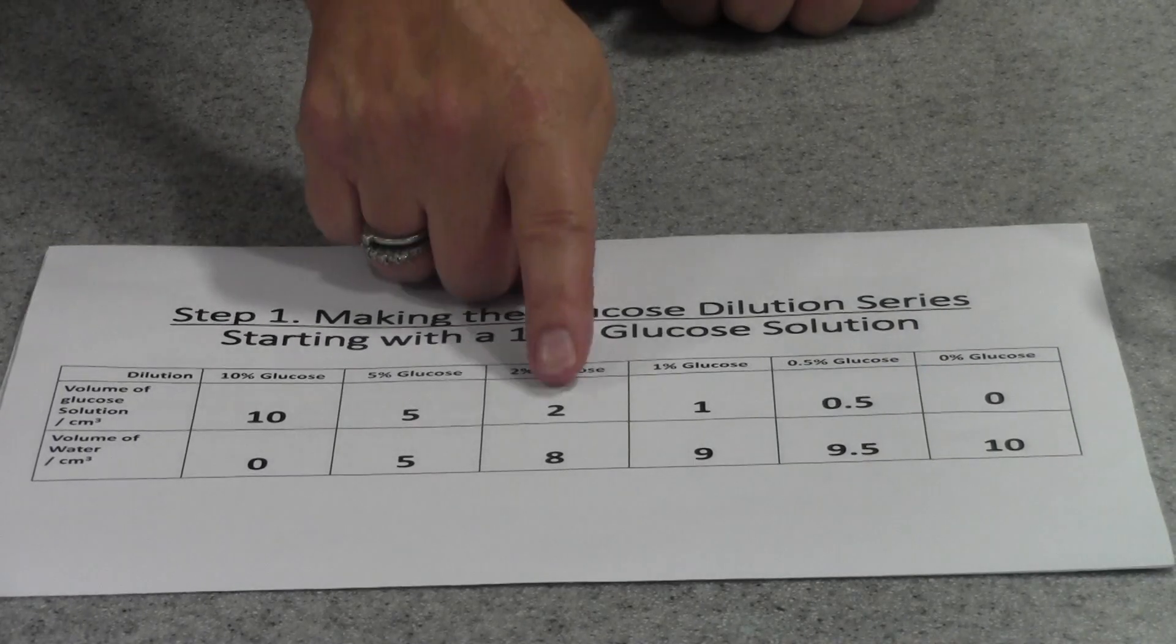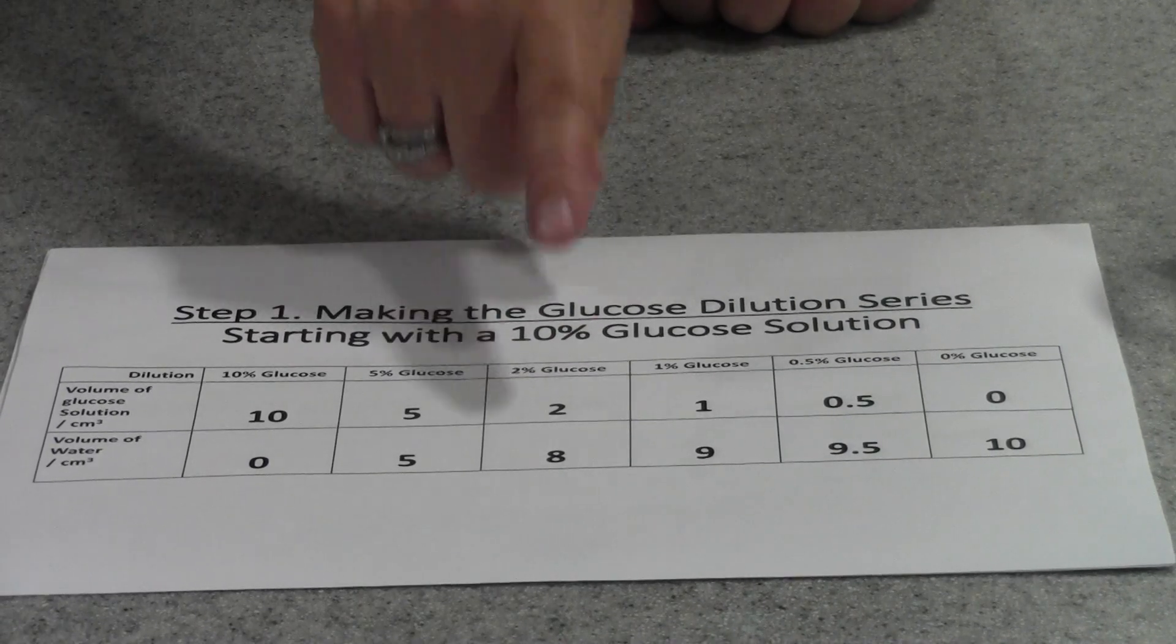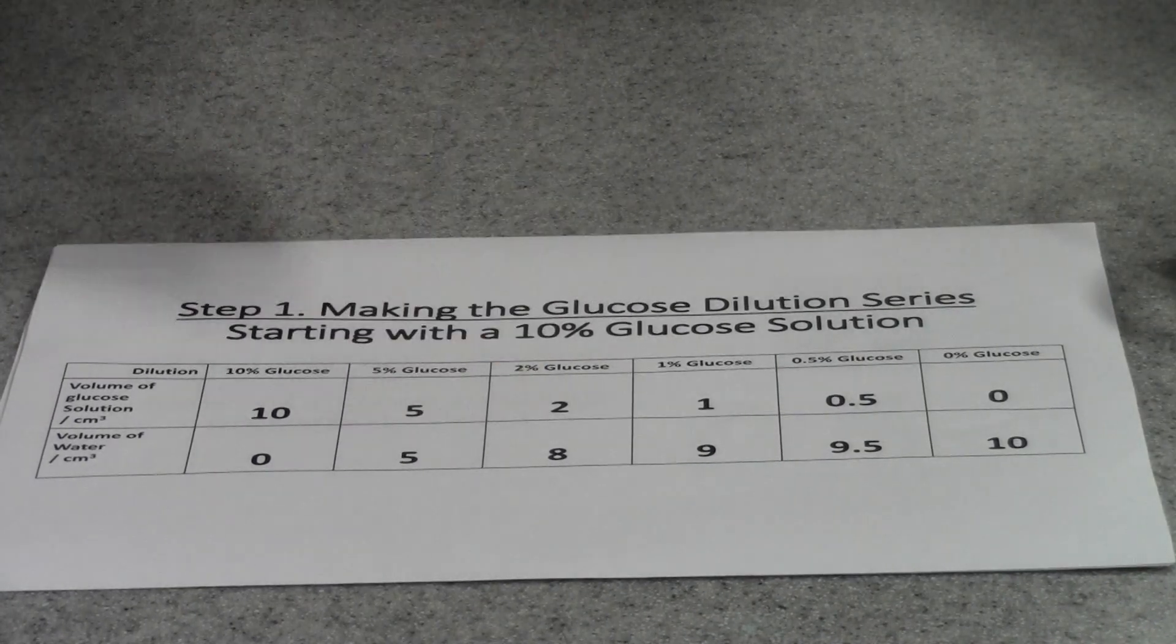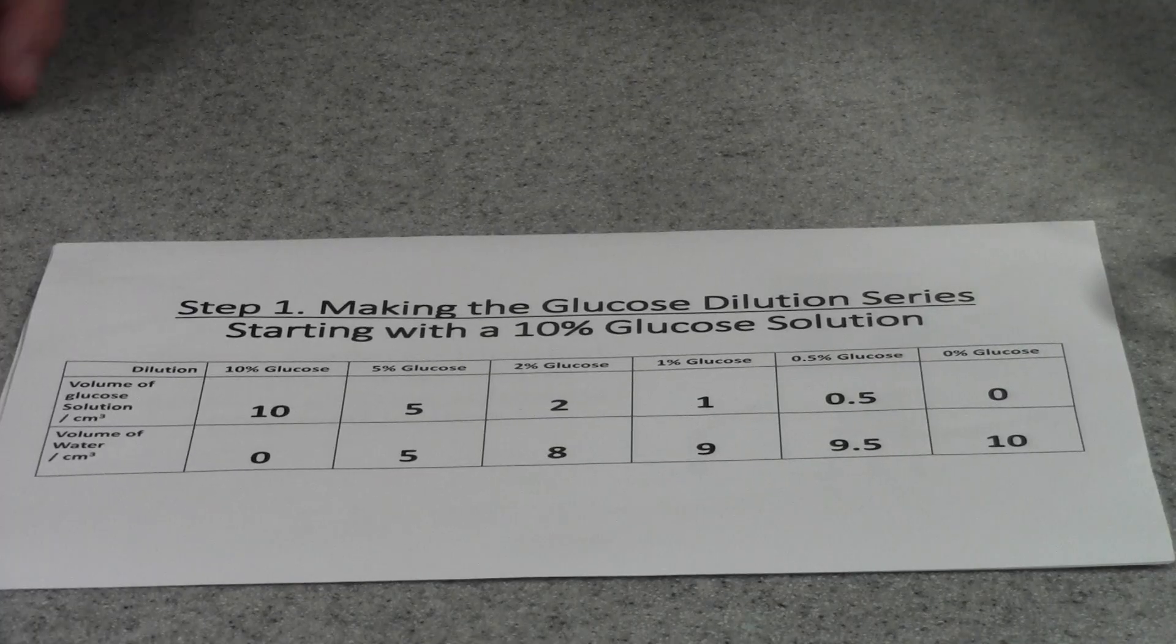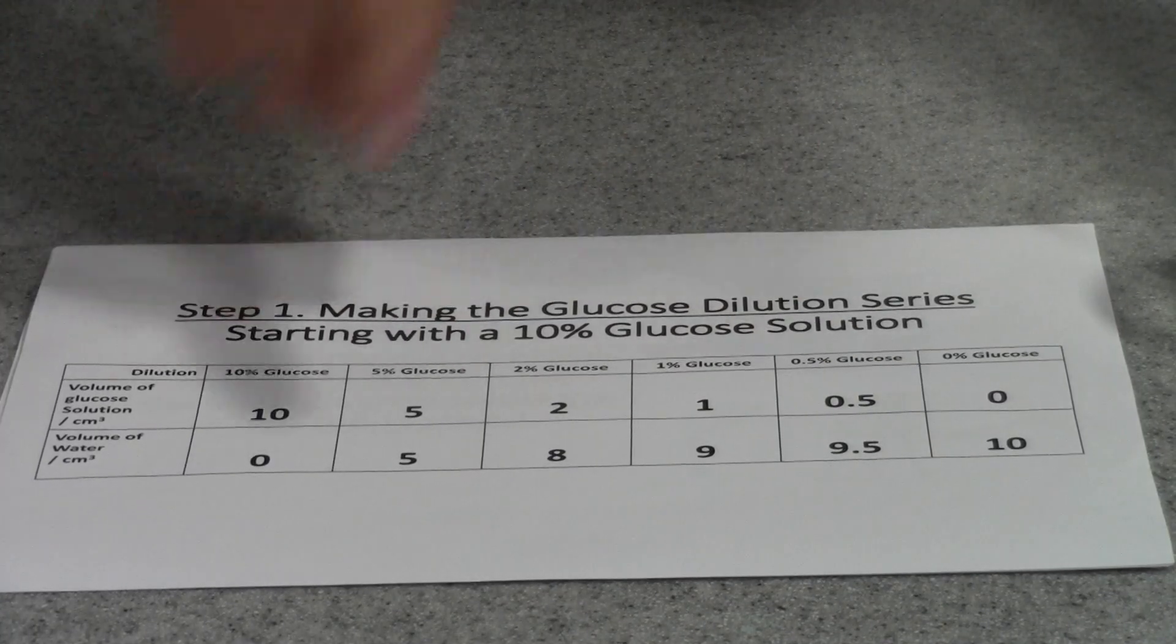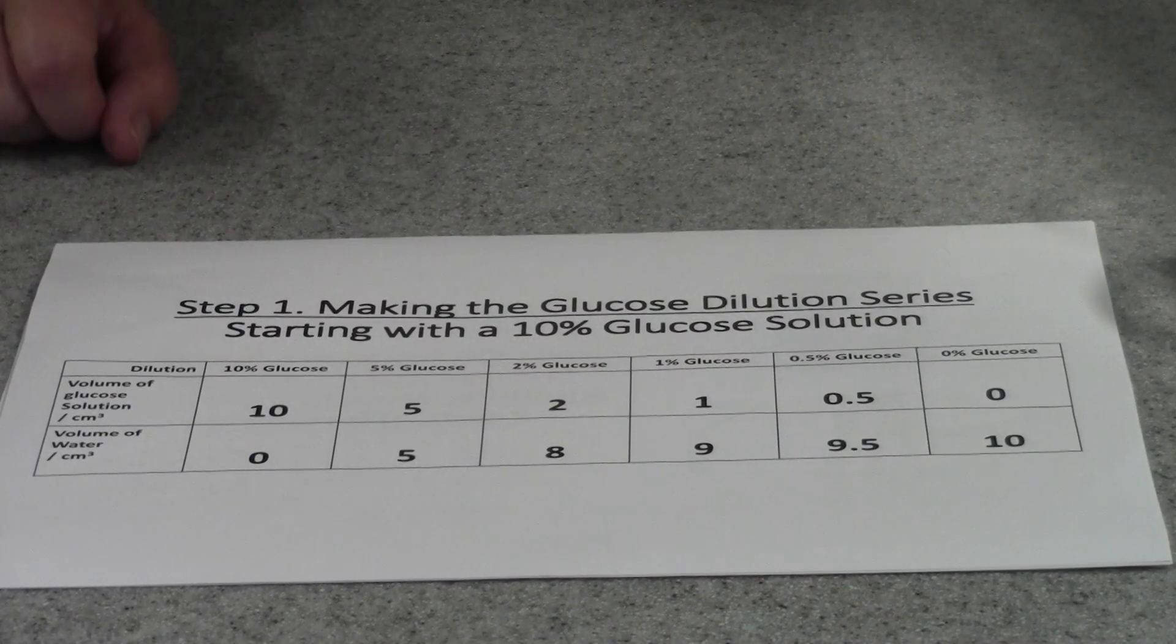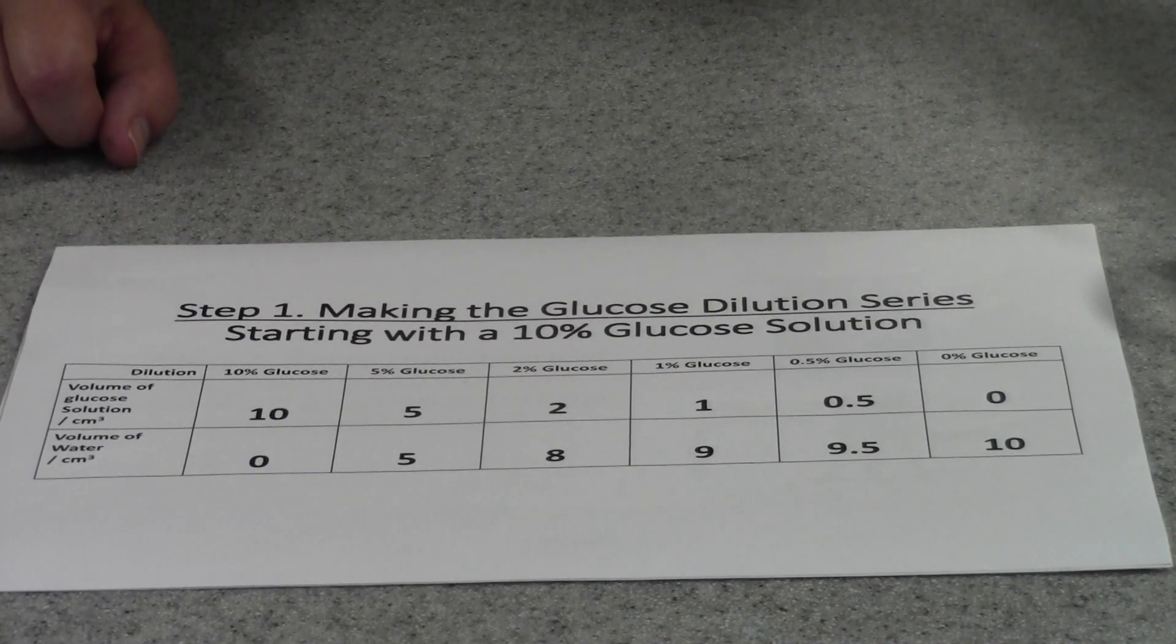If we want to make a 2% glucose solution it would be 2 centimetres cubed of the 10% glucose solution with 8 centimetres cubed of distilled water and so on. So we're going to end up with a range of 10, 5, 2, 1, 0.5 and 0% glucose.